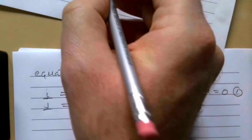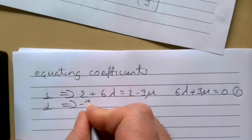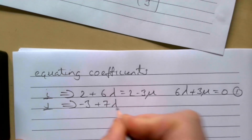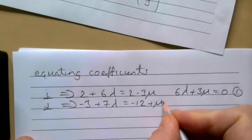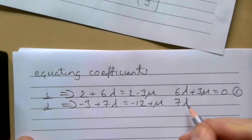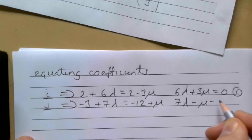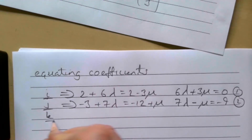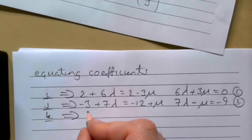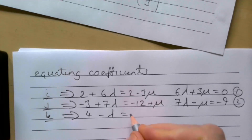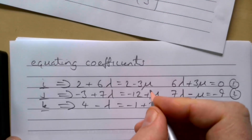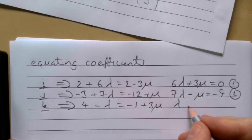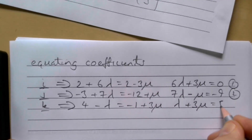Rearranging the j equation: 7λ − μ = −9 — call that equation 2. We could use the k equation as a check since we already have two equations with two unknowns. For k: 4 − λ = −1 + 3μ, rearranging gives λ + 3μ = 5 — call that equation 3.